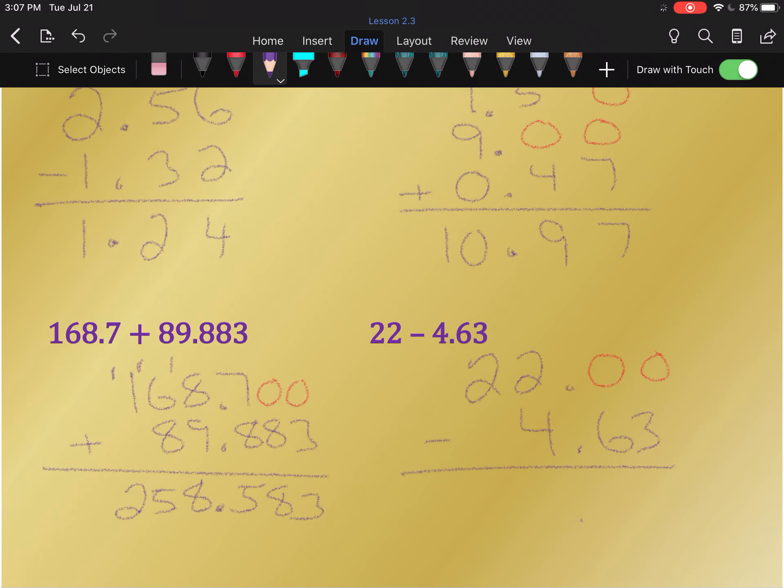Now drop the decimal point straight down and treat it like a normal subtraction problem. We need to borrow from this 2 to make the first 0, 10, so that I can borrow from that, make it 9, to make this 0, 10, so that I can actually subtract. 10 minus 3 is 7. 9 minus 6 is 3. Borrowing again from this 2 to make this 11. 11 minus 4 is 7.